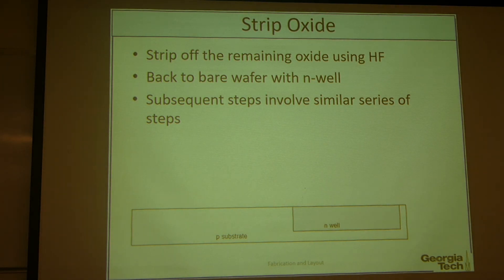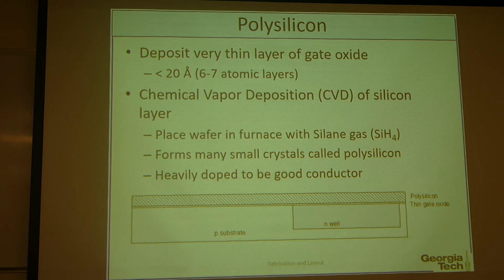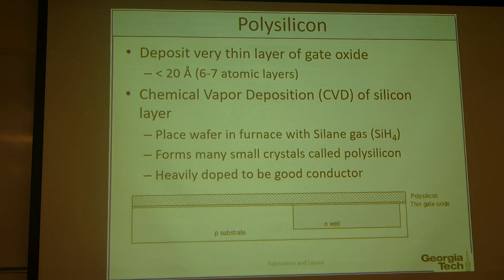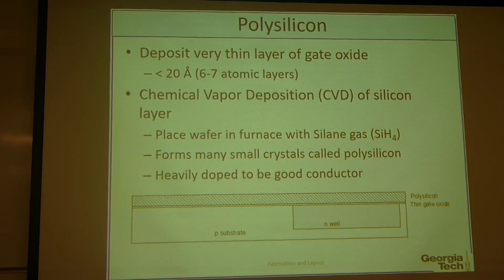The subsequent steps will be pretty much similar to the previous ones. Finally, we make our gate. Before making the gate oxide, we need to clean the wafer as thoroughly as possible using a process called RCA cleaning, because the gate oxide area is the most significant part of the transistor. After cleaning, we deposit or oxidize the silicon surface up to a thin layer of gate oxide of approximately 2 nanometers. Then we chemically vapor deposit a silicon layer on top to make a gate — placing the wafer in a furnace with silane gas, which forms polycrystalline silicon, called polysilicon.